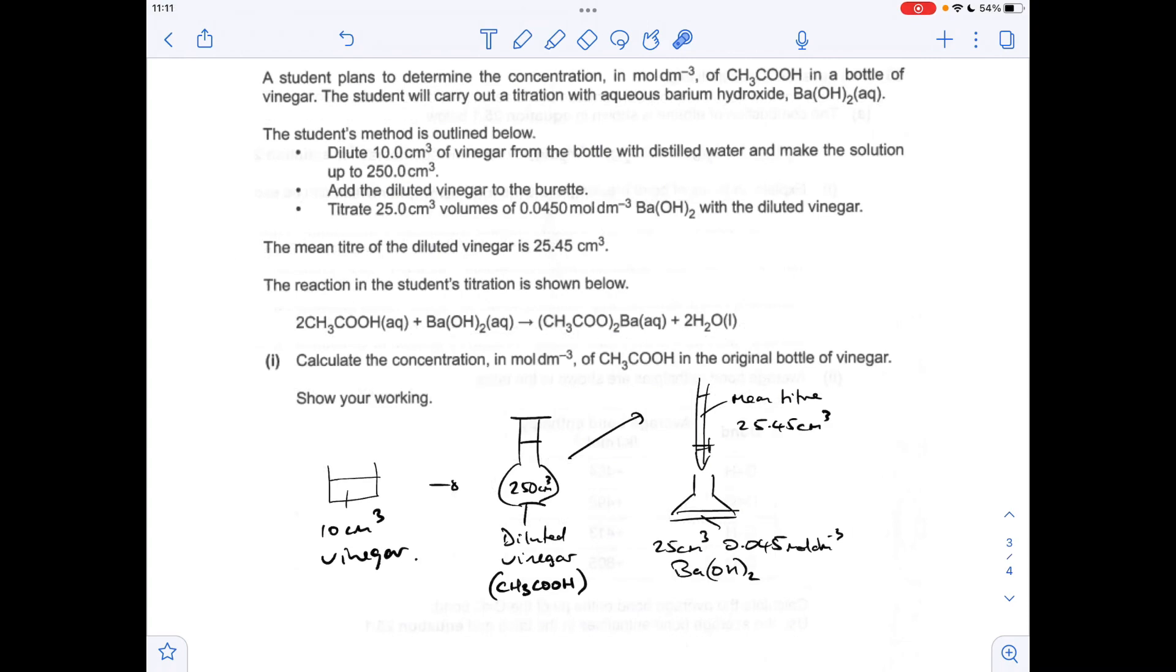Moving on to the titration now, so you'll notice I've got my usual visualisation diagram there. So they've taken 10 cm cubed of vinegar from the bottle, diluted it into a 250 cm cubed volumetric flask. Obviously that contains the ethanoic acid. It's fed into a burette and titrated against barium hydroxide, so we know the concentration and volume of the barium hydroxide, and we know the mean titra was 25.45 cm cubed.